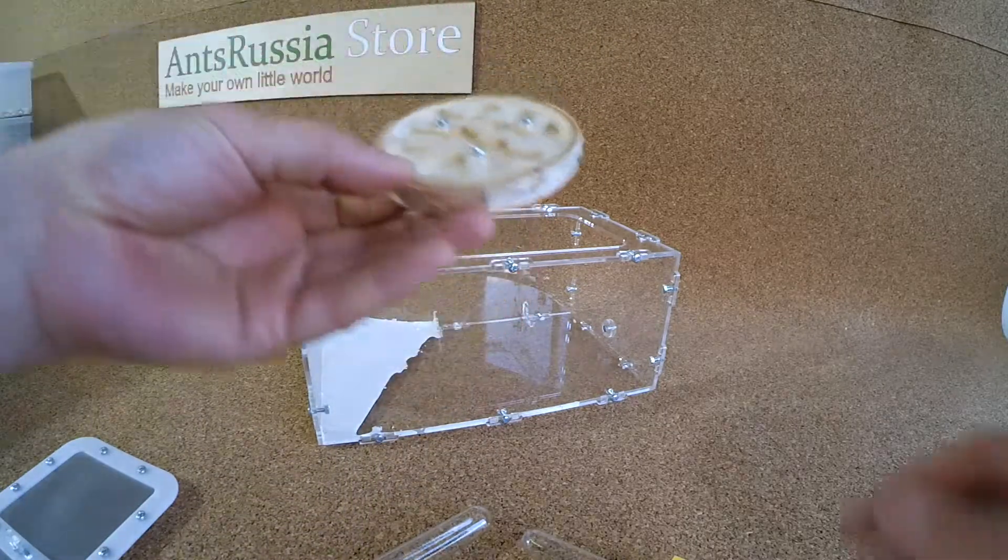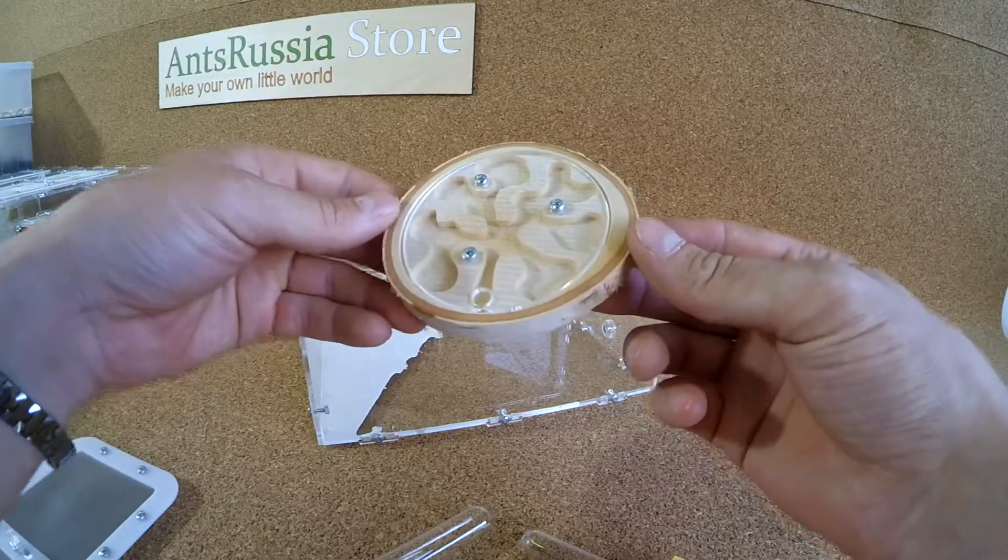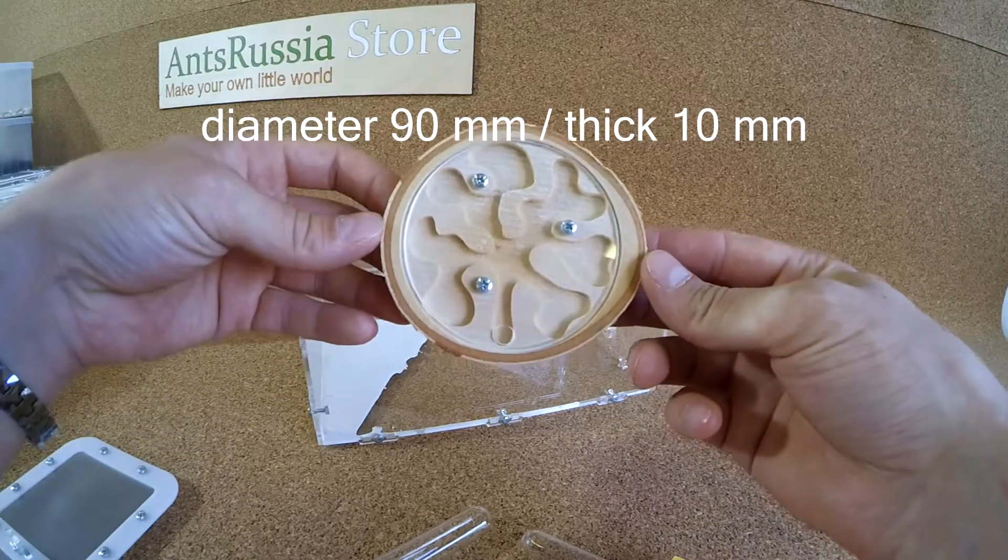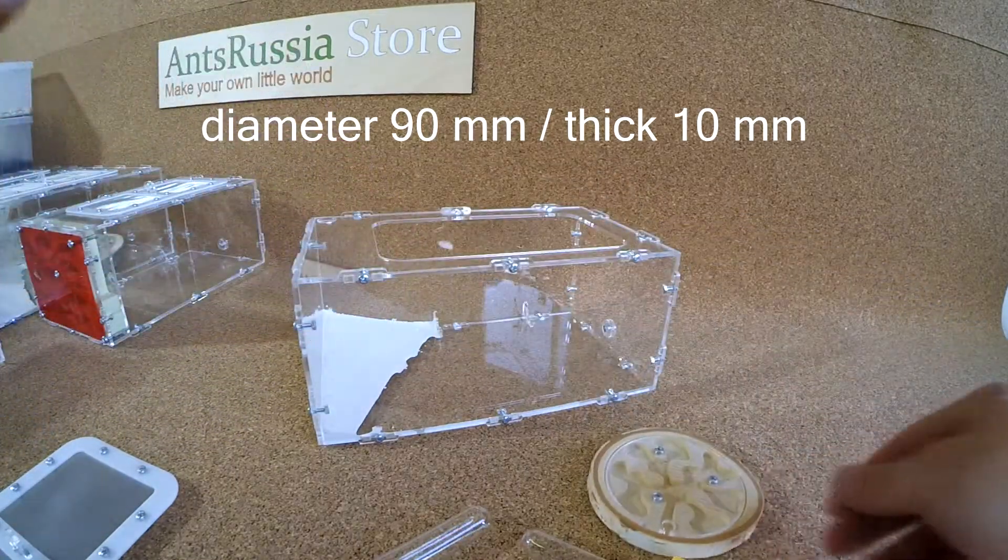The nest of the formicarium is made from a cut of the tree trunk. The diameter is 90 mm and 10 mm thick.